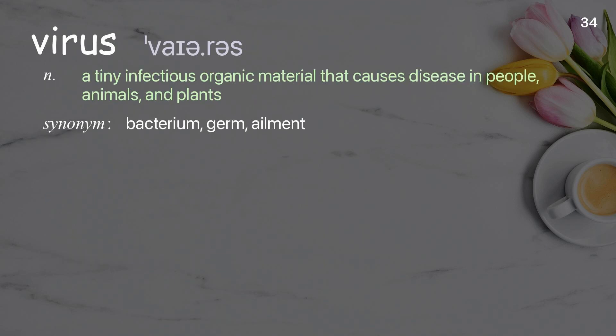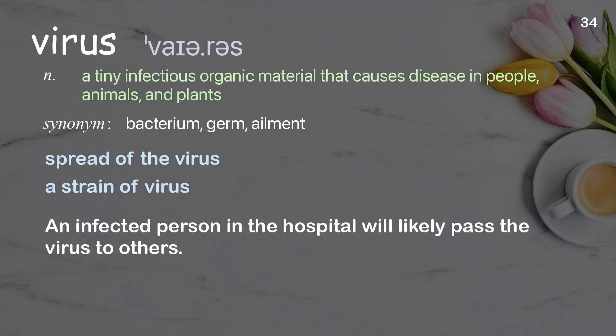Virus: a tiny infectious organic material that causes disease in people, animals, and plants. Examples: spread of the virus, a strain of virus. An infected person in the hospital will likely pass the virus to others.